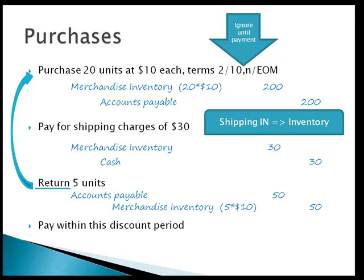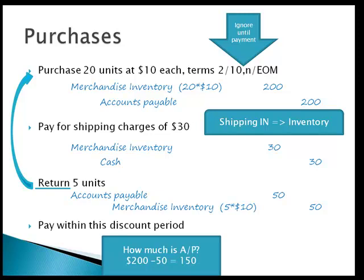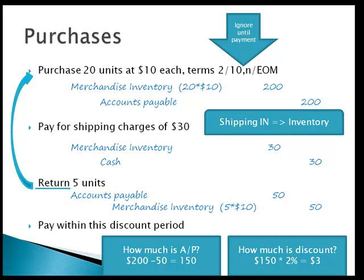Finally, if we pay within the discount period — 2% if paid within 10 days, otherwise balance due at end of month — first figure out how much is in accounts payable. We started with $200, got a credit for $50, so the balance in accounts payable is $150. The discount is $150 times 2%, which equals $3. Note that shipping is not included — shipping was to a third party and is not part of this discount. The discount is between us and just the one vendor.